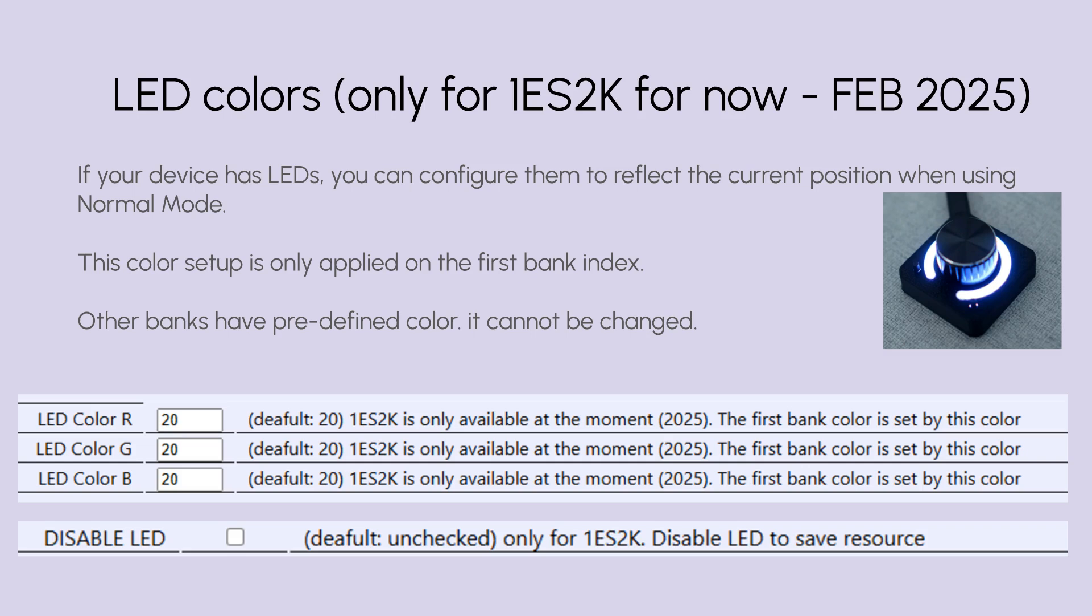If your device has LEDs, you can configure them to reflect the current position when using normal mode. This color setup is only applied to the first bank index. For other banks, the LEDs will use predefined colors that cannot be changed. You can also turn off all LED colors completely by checking the Disable LED checkbox. Once disabled, the LEDs will remain off at all times. Currently, LED color configuration is available only for the 1ES2K model.